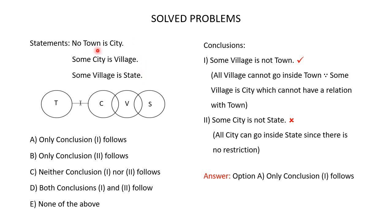No town is city — draw a circle for town and a circle for city, then draw a line with a cross between them to indicate no town is city. Some city is village means there is a partial overlap between city and village. Some village is state means there is a partial overlap between village and state. This is the Venn diagram for the given statements. Now let's check which of the given conclusions follow.